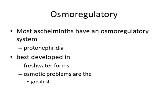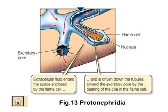Osmoregulatory functions: most Aschelminthes have no osmoregulatory systems, and some have protonephridia. These are best developed in freshwater forms, where osmotic problems are greatest. In marine environments there is no need for protonephridia — they will be isosmotic. Here you can see the protonephridia that includes flame cells, nucleus, and excretory pores.